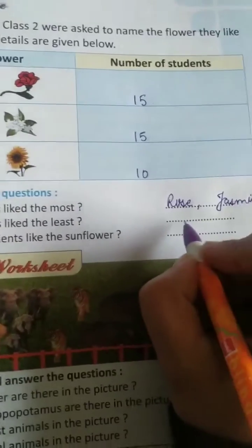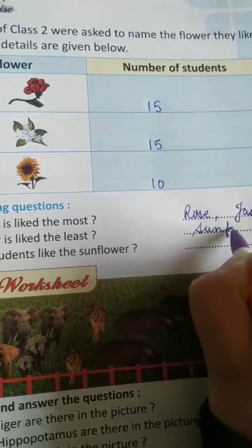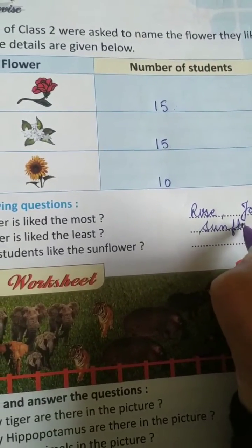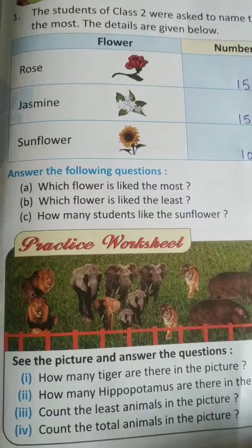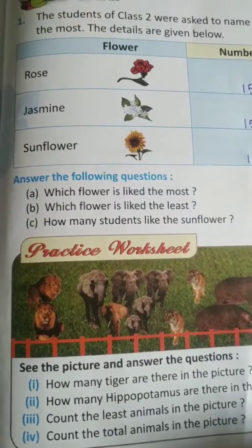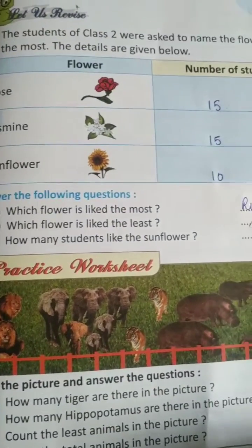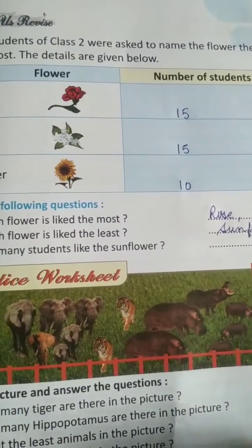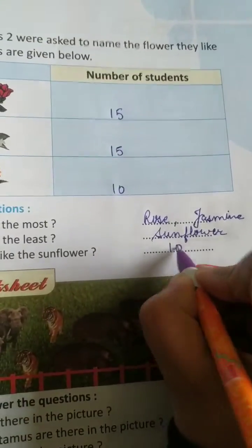Which flower is liked the least? The least is only one, so the answer is sunflower — S-U-N-F-L-O-W-E-R. How many students like sunflower? It is 10.